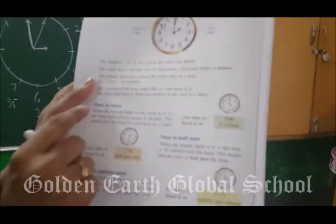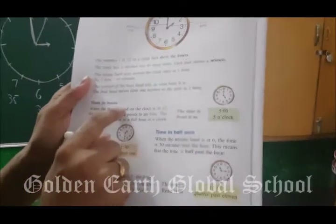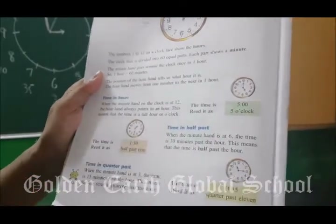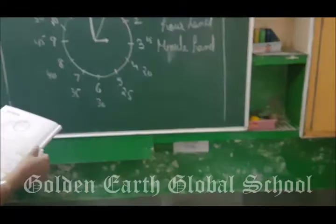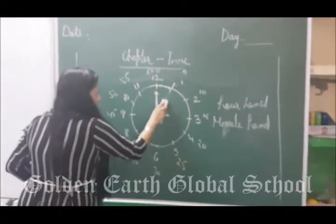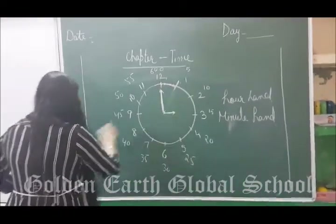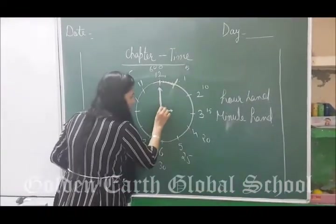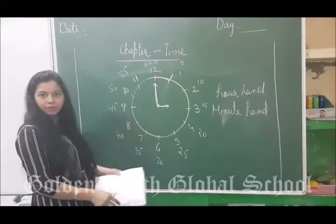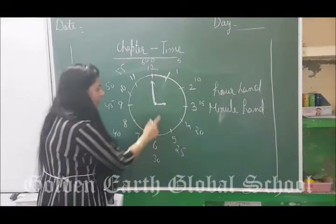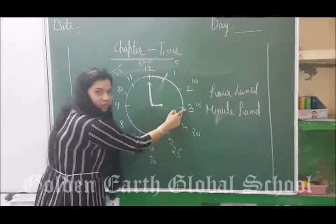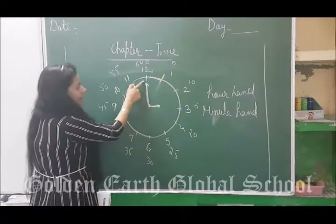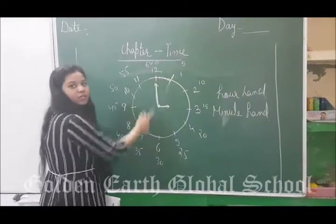Now look at this book. Time in hours — time in hours means we look at where the small hand is pointing to find how many hours it is. For example, if the small hand is at 3, it means 3 hours, so the time is 3 o'clock, which is written as 3:00.